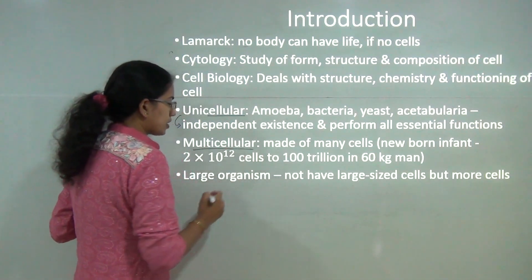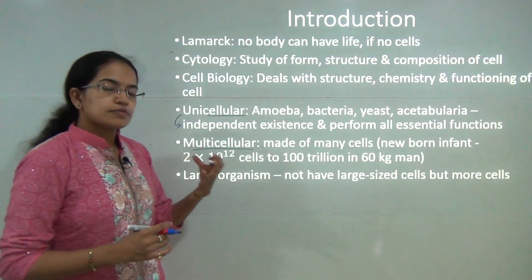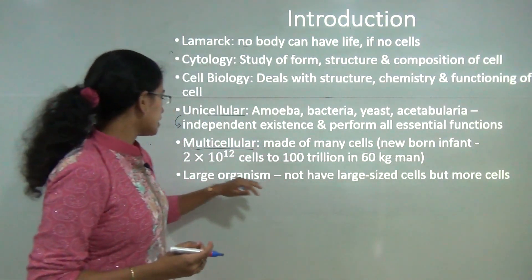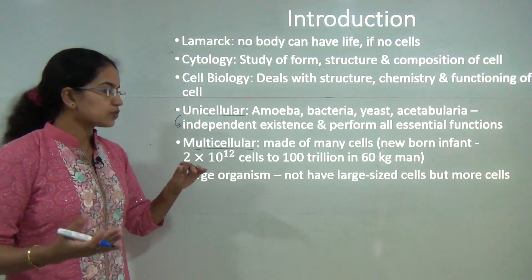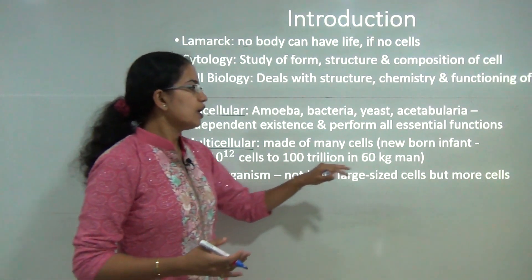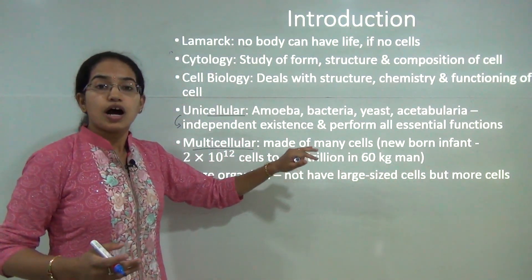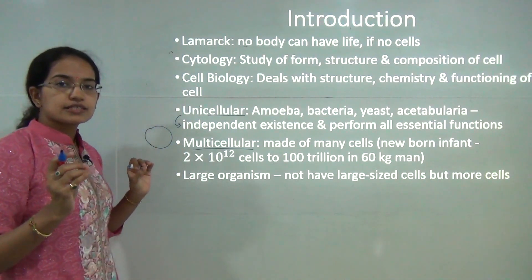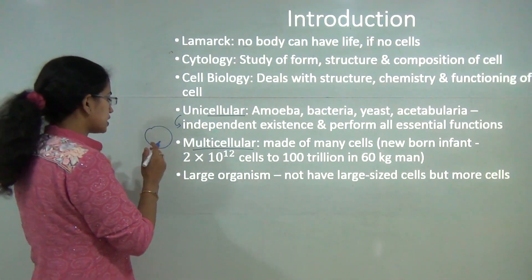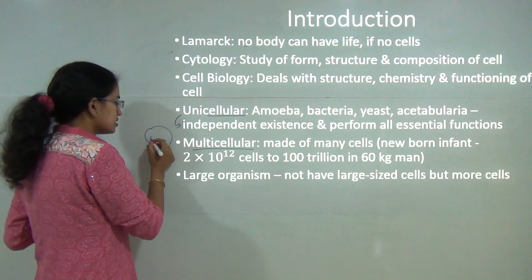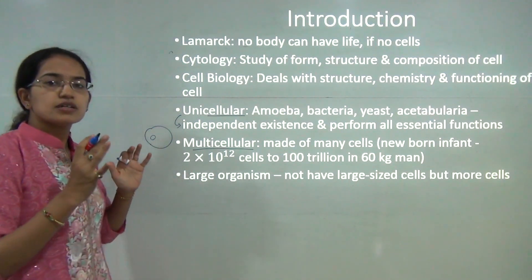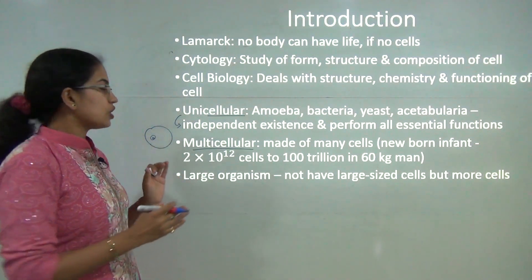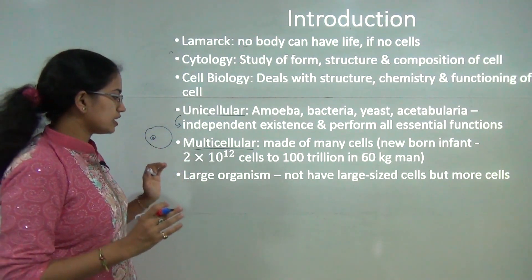When it comes to multicellular organisms like human beings, the body is made up of many cells. A newborn baby would have 2 × 10¹² cells, compared to a man of 60 kg who might have up to 100 trillion cells. Each of these cells has a complex composition — the nucleus, cytoplasm, chromosomes, DNA and RNA. Understanding this basic unit of life is very important.